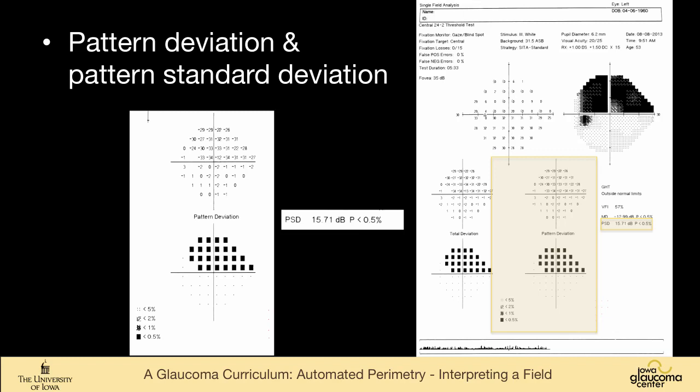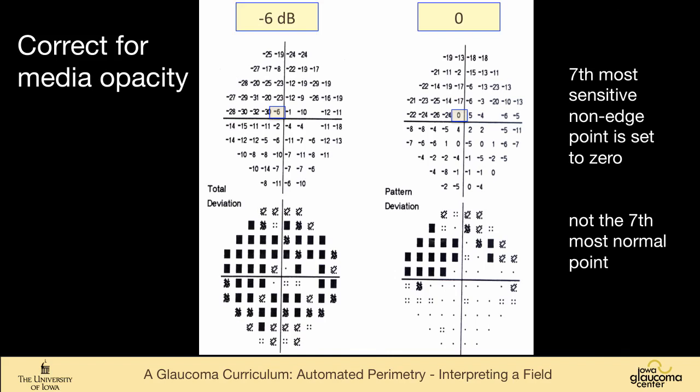A really important part of the field to get used to looking at is the pattern deviation. So pattern deviation is a measure of focal loss. It determines whether points are significantly depressed compared to their neighboring points. So you can see these points are considered to be significantly depressed in pattern deviation, and then the sum total of that is considered the pattern standard deviation. So that's a measure of focal loss.